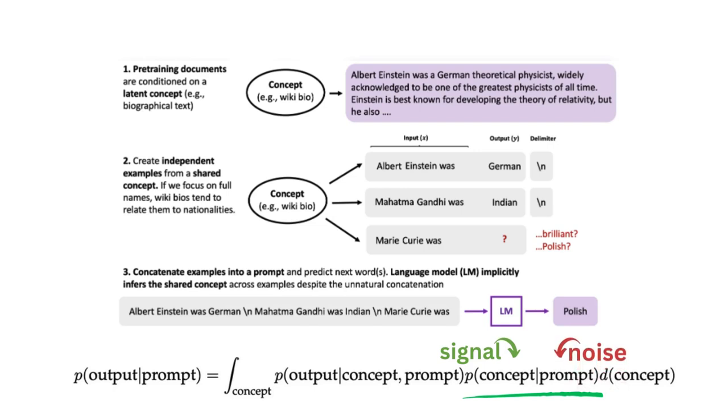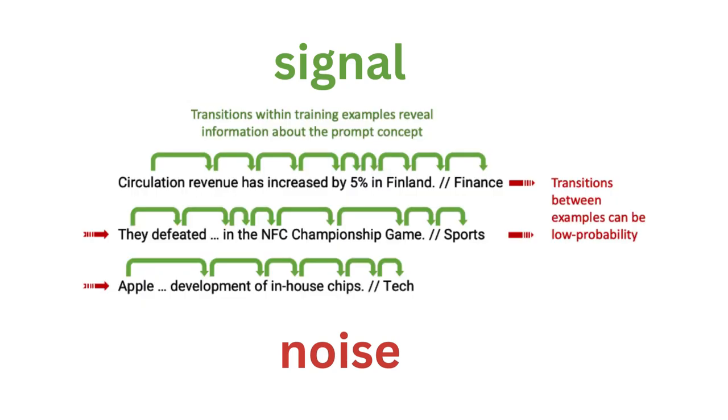There is an interesting phenomenon of sharpening the concept signals here. In this particular framework, you can separate the information within the prompt into two things: signal, which are the information-rich portion of the prompt, and noise, which are the region in the prompt that could potentially add confusion to the understanding of the in-context learning task. As you can see in this example, the transition within training sample has a lot of signals, while transition between example add in noise.